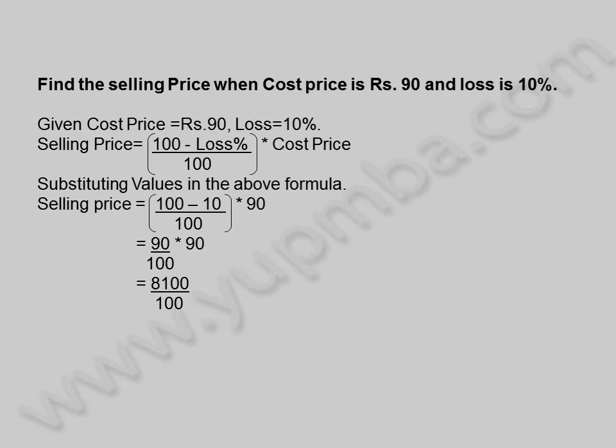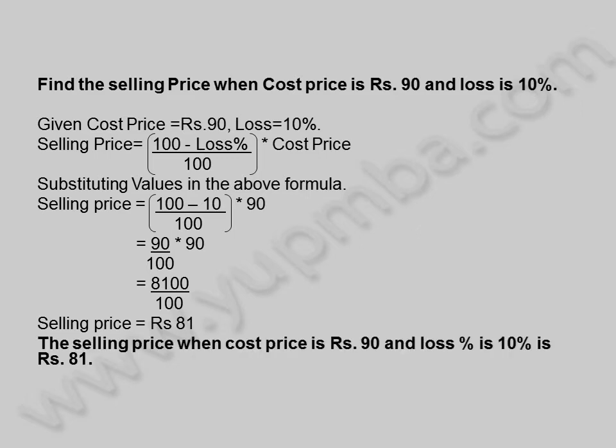That is equal to 8100 by 100. Selling price is equal to 81 rupees. The selling price when cost price is 90 rupees and loss percentage is 10 percentage is 81 rupees.